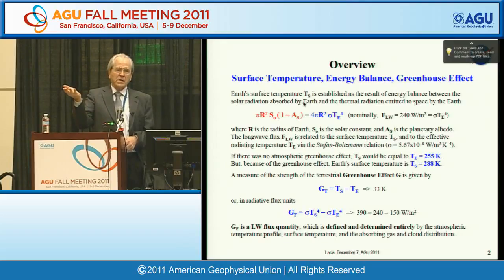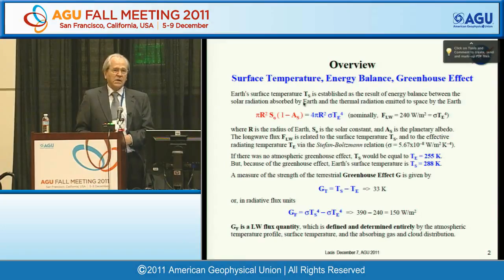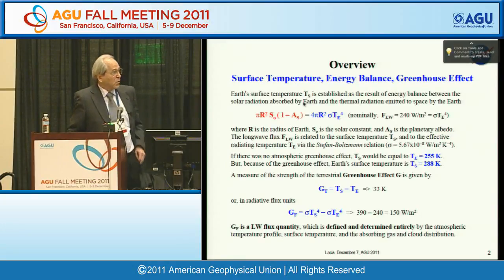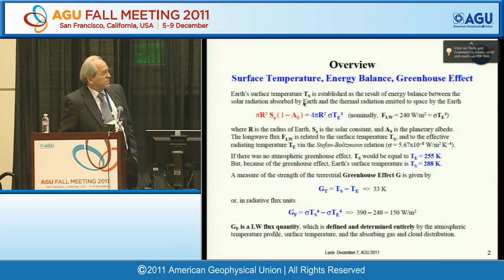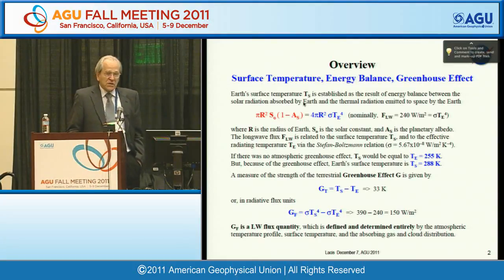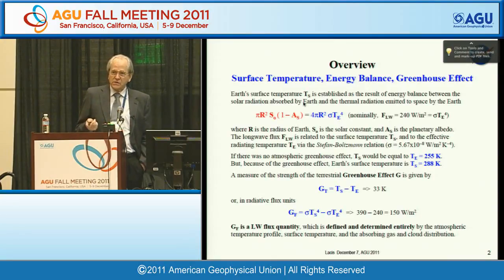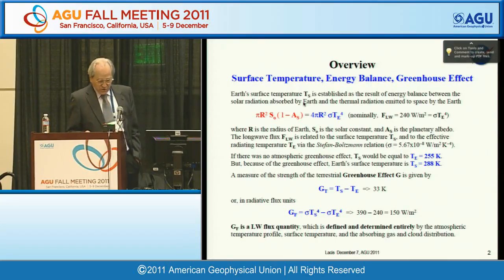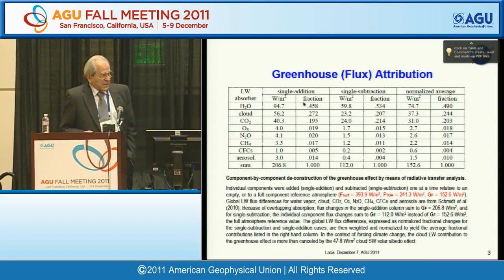This amounts to a black body radiant temperature of 255 Kelvin — that would be the surface temperature of the Earth if there were no greenhouse effect. The greenhouse effect happens because there are absorbing gases in the atmosphere. They absorb the up-going radiation and re-emit half going up and half back down. This downwelling radiation gives you additional warming to increase the surface temperature above the black body temperature, giving you 288 Kelvin. The difference is a greenhouse effect, which can be expressed as approximately 150 watts per square meter.